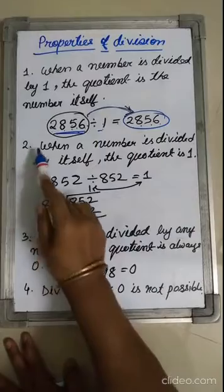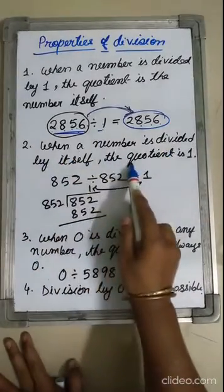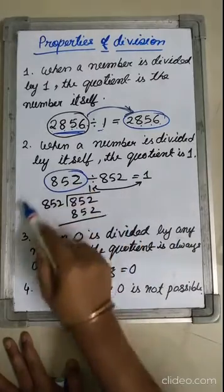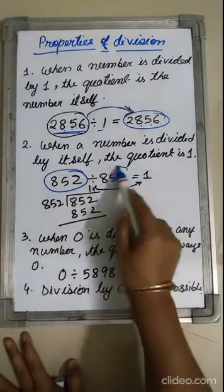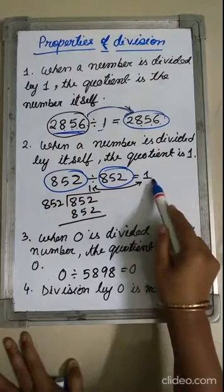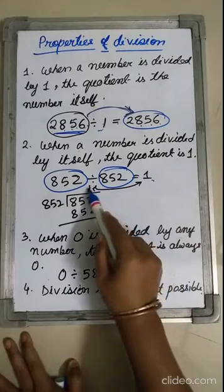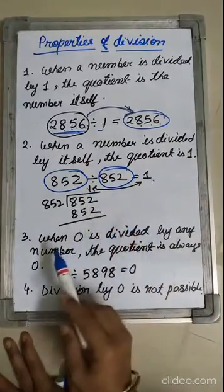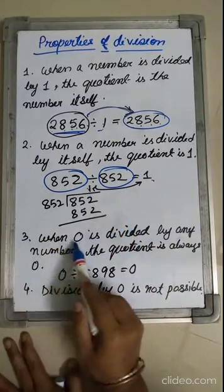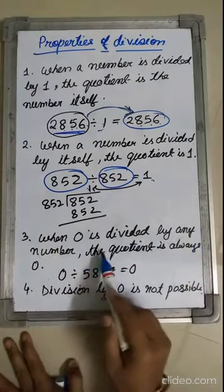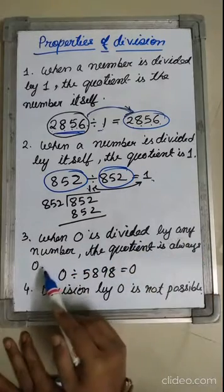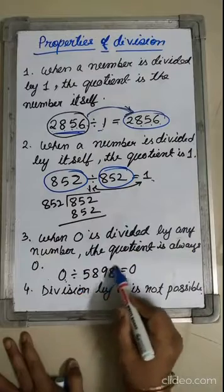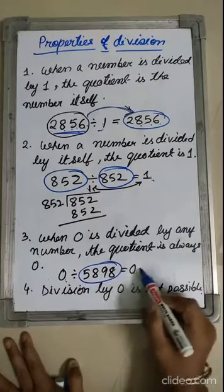Property 2: when a number is divided by itself, the quotient is 1. If we divide a number by the same number, the result is 1. Property 3: when 0 is divided by any number, the quotient is always 0. If we divide 0 by any number, the result is 0.